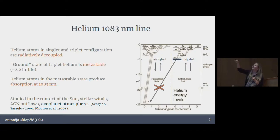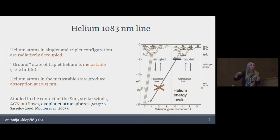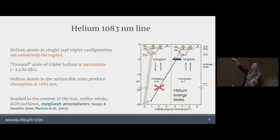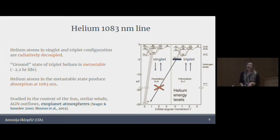The lowest lying state of the triplet helium is radiatively decoupled from the ground state and has an extremely long lifetime — it's metastable. You can almost think of triplet helium as a separate species with this as its ground state. Because it's so high up — basically 20 electron volts higher than the ground state — all these transitions happen in either visible or near-infrared, which is really convenient for observing them from the ground, whereas transitions from the actual ground state of helium are all the way in the extreme UV.